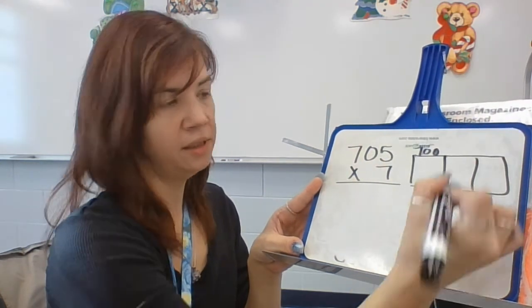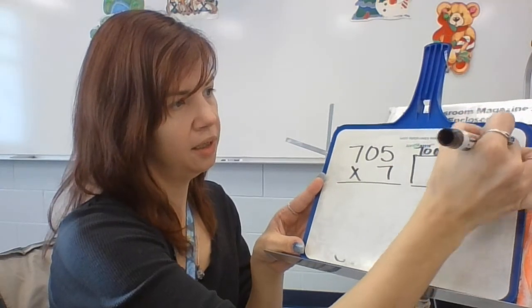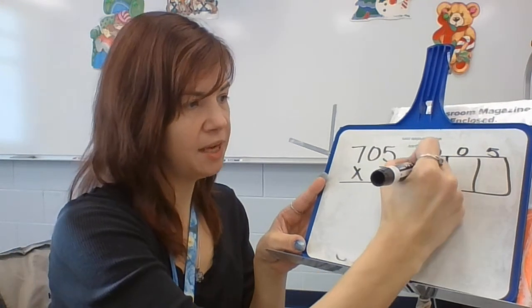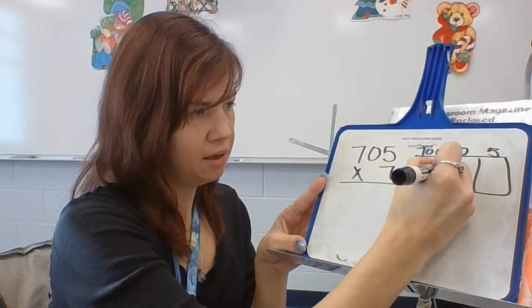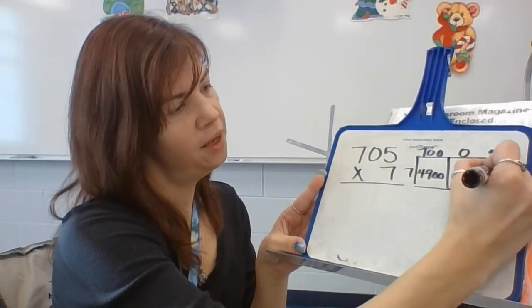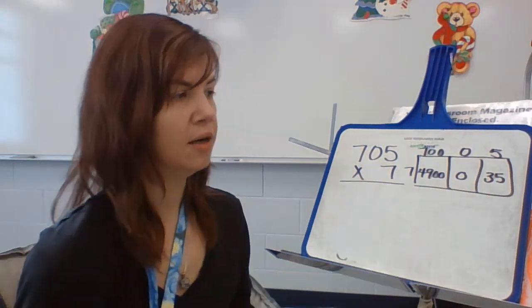So, I have 700, big zero, and 5. And there's our 7. 7 times 7 is 49, 100, 7 times 0 is 0, and 7 times 5 is 35. So I should see these numbers down here.